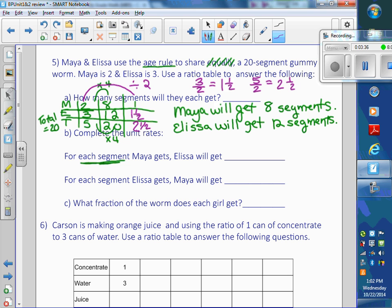So for each segment, each one segment Maya gets, Alyssa gets 1 and a half segments. Does that make sense?